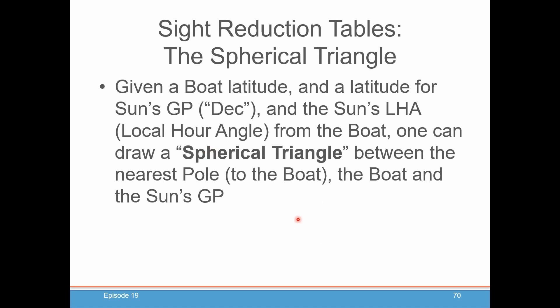So just to reiterate and to just make it clear in your mind, once you're given a boat latitude, latitude for the sun's GP which we all know is called declination, and the sun's LHA, or whatever object you're observing, its LHA from the boat, we can draw that spherical triangle between the nearest pole to the boat, the boat, and the sun's GP.